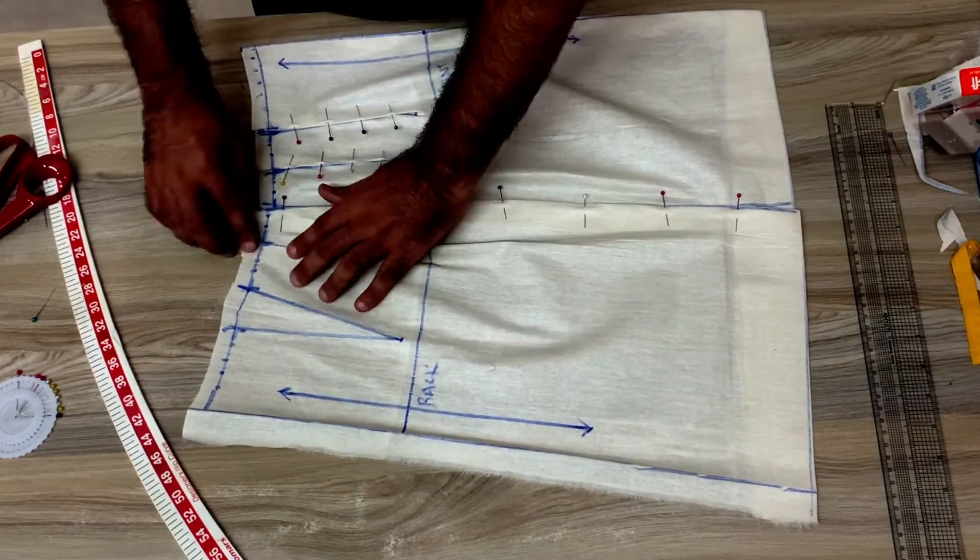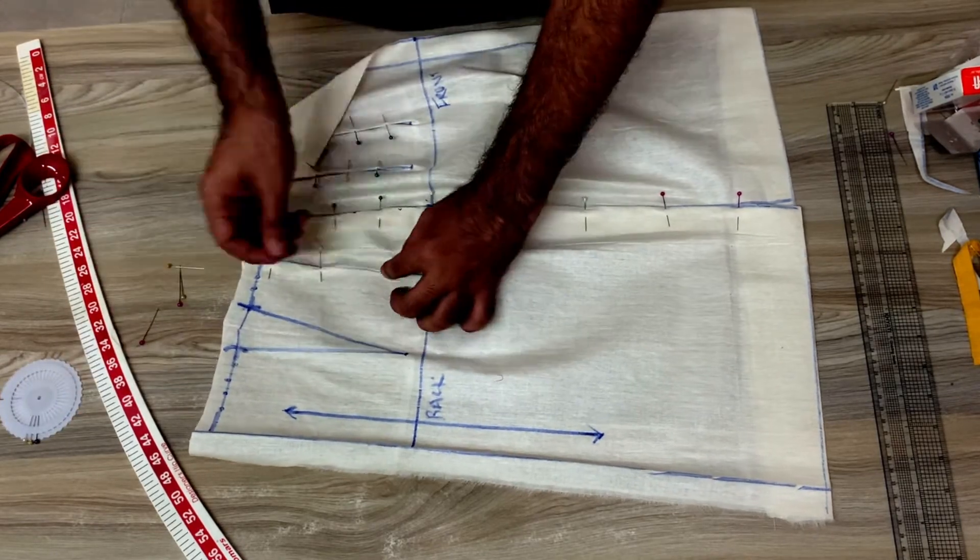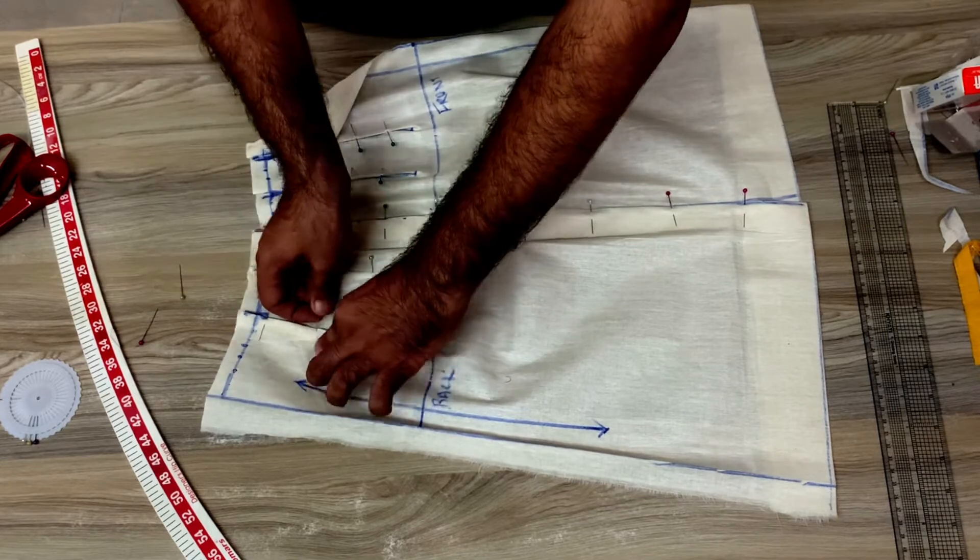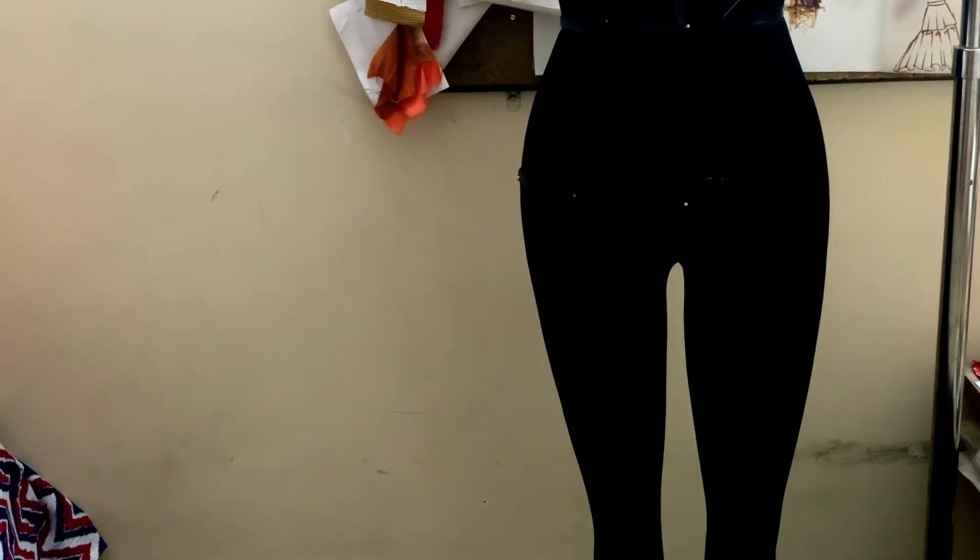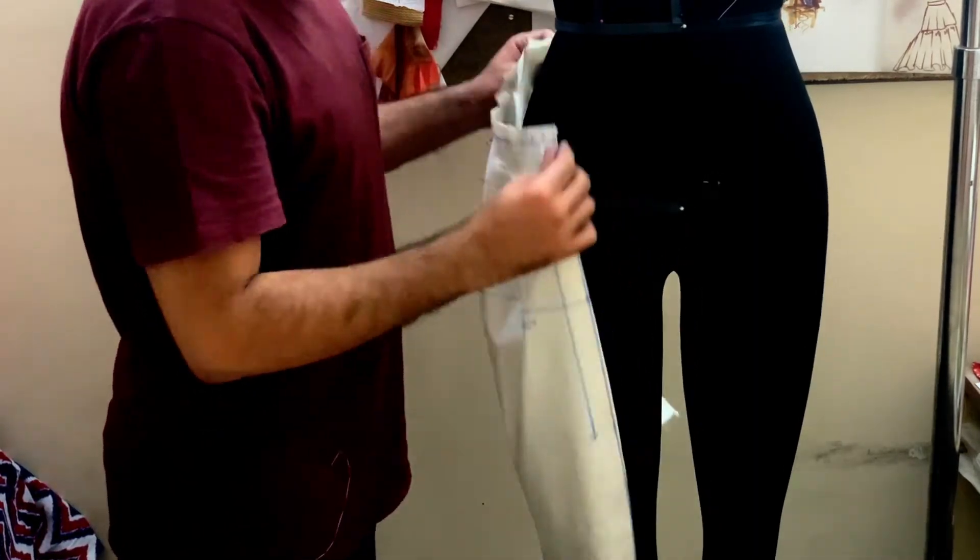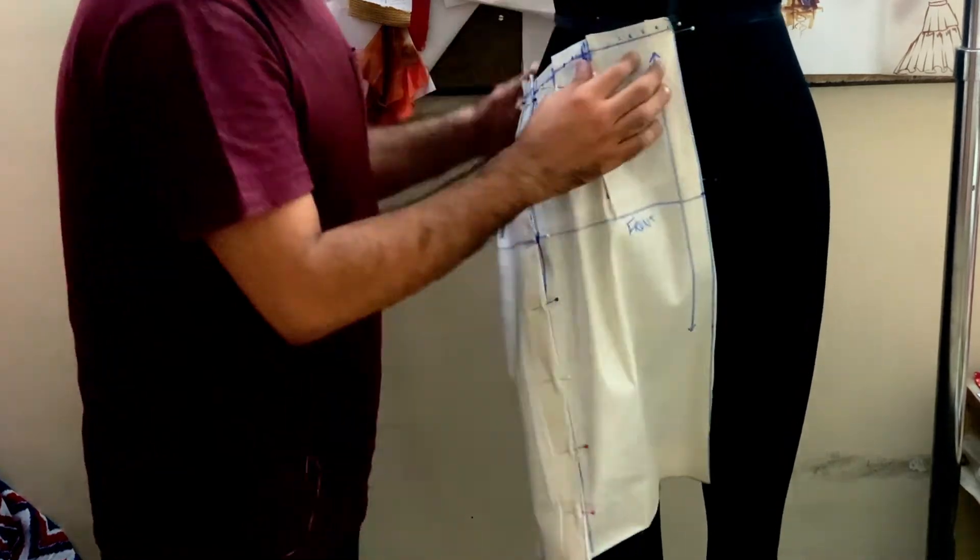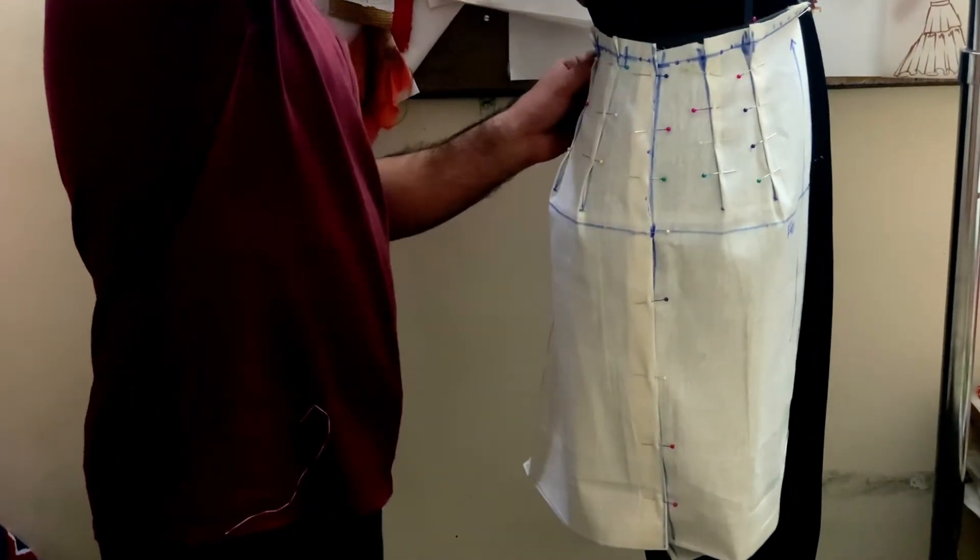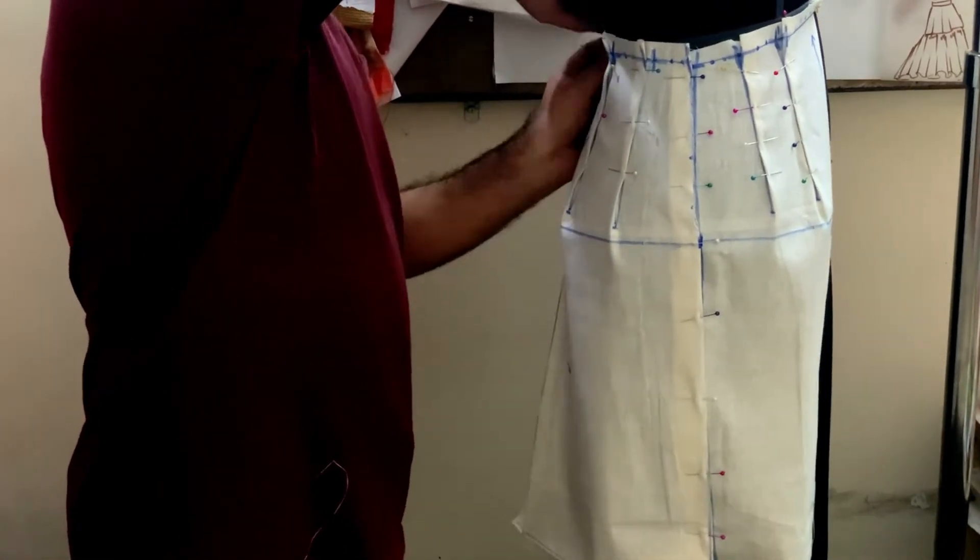After pinning the darts, you will go and check the hang of the test fit on the dress form. This is how your basic skirt is made. It's very simple and very easy to make a basic pencil skirt. If you want a little straight skirt, you can let your side seam be normal.